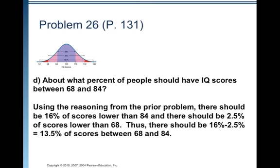There should be 2.5 percent of scores lower than 68. How did we figure that out? Well, 68 to 132 captures 95 percent of all observations, which leaves 5 percent to be in the two symmetric tails. So 5 percent divided by 2 is 2.5 percent.